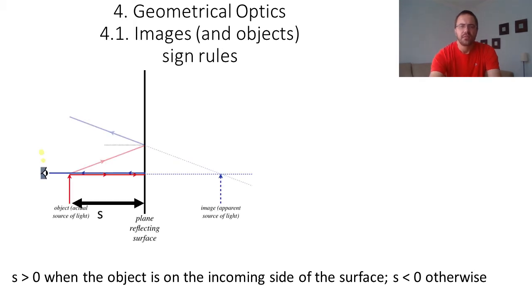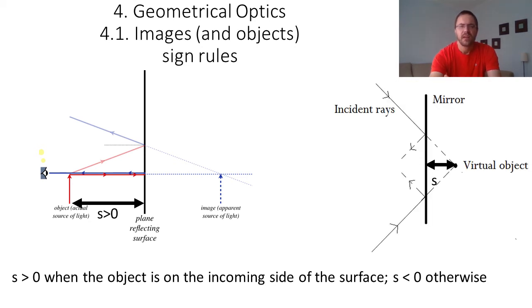The first sign rule is for the distance of the object from the optical device, labeled s. s is positive when the object is on the incoming side of the surface, and negative otherwise. In this plane mirror example, the object is on the left and the incoming side of the mirror surface is also on the left, so s is positive. In another example, incoming rays converge to a virtual object on the right, but the incoming side of the mirror surface is on the left, so s is negative.